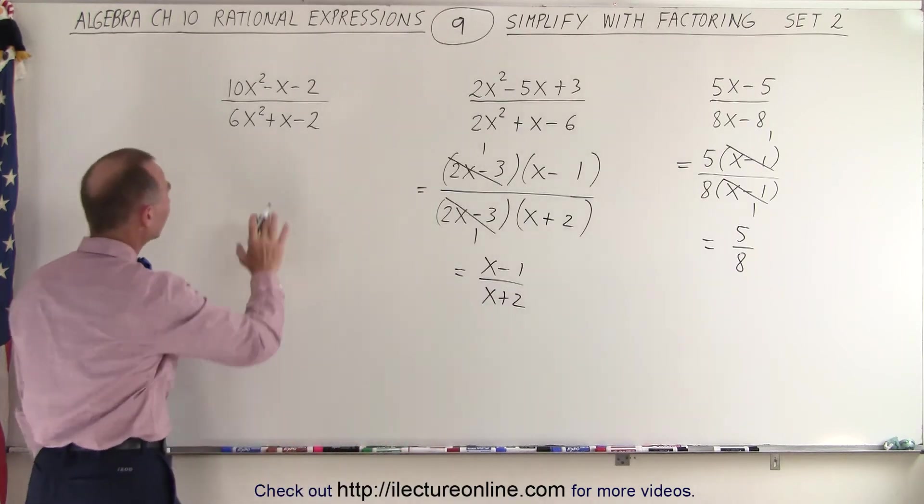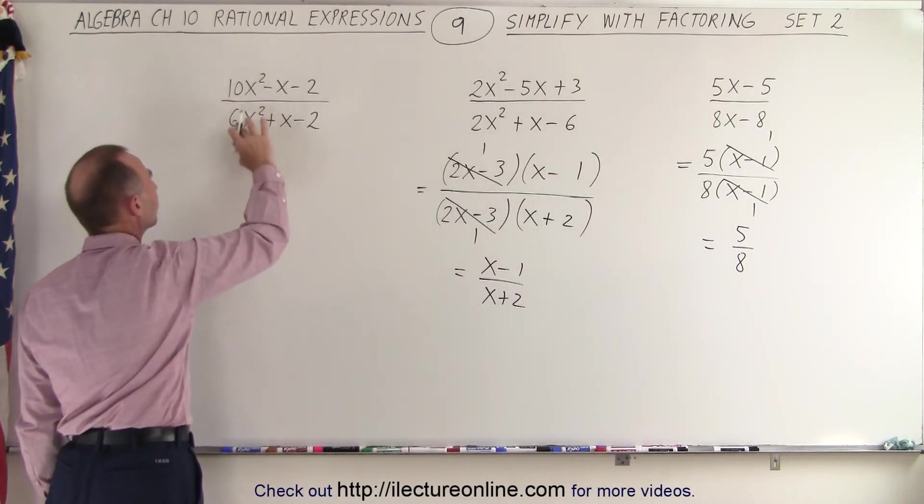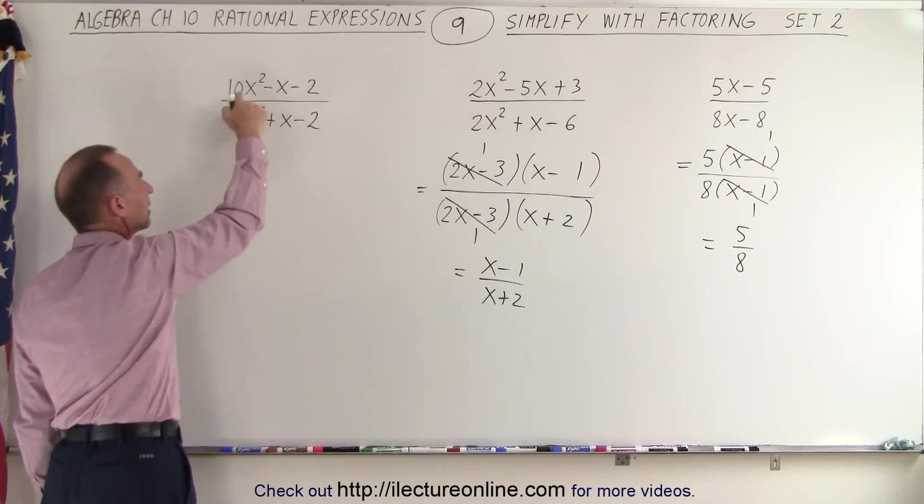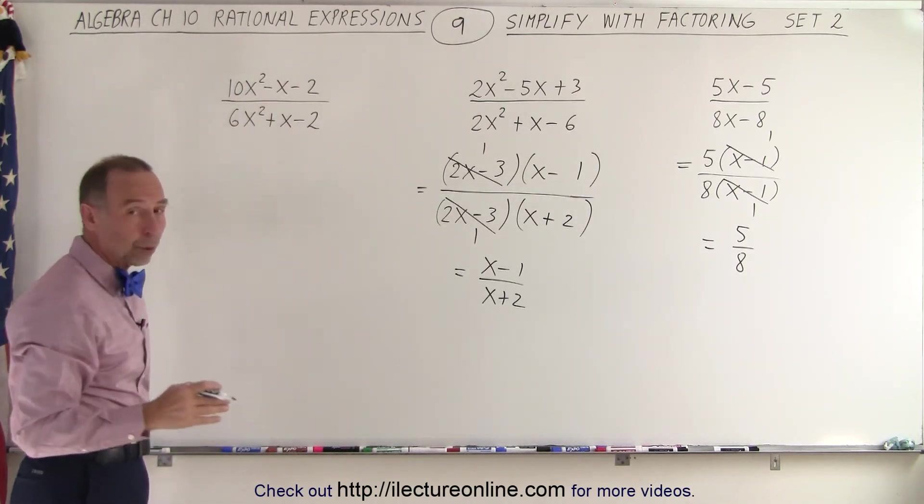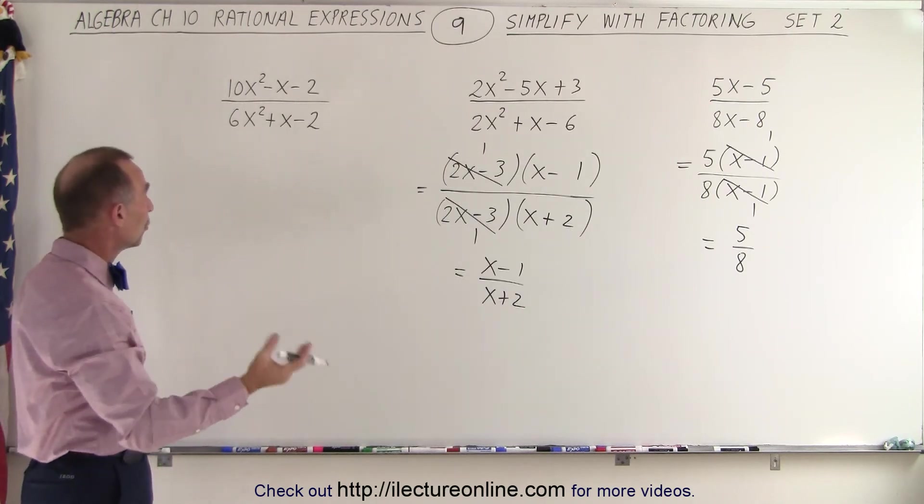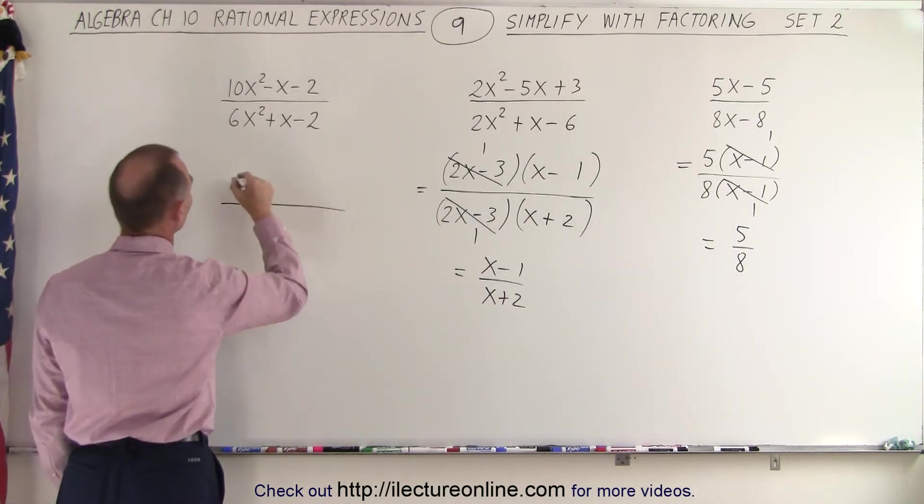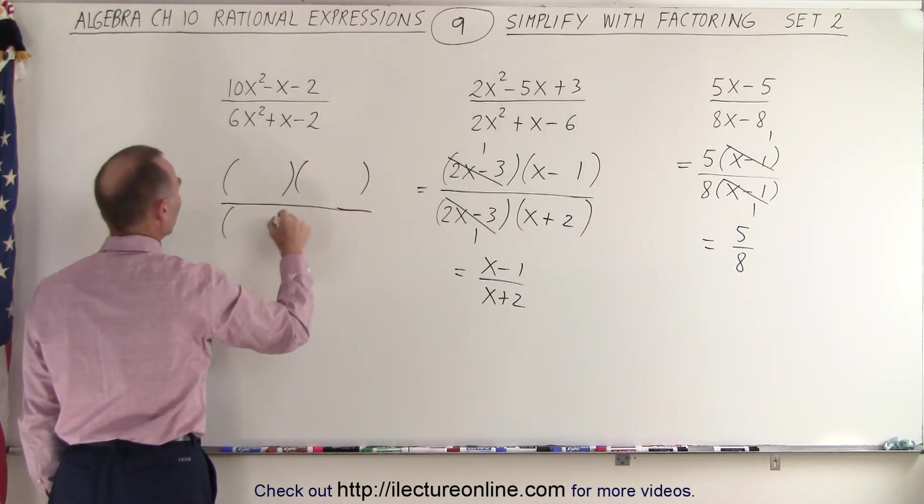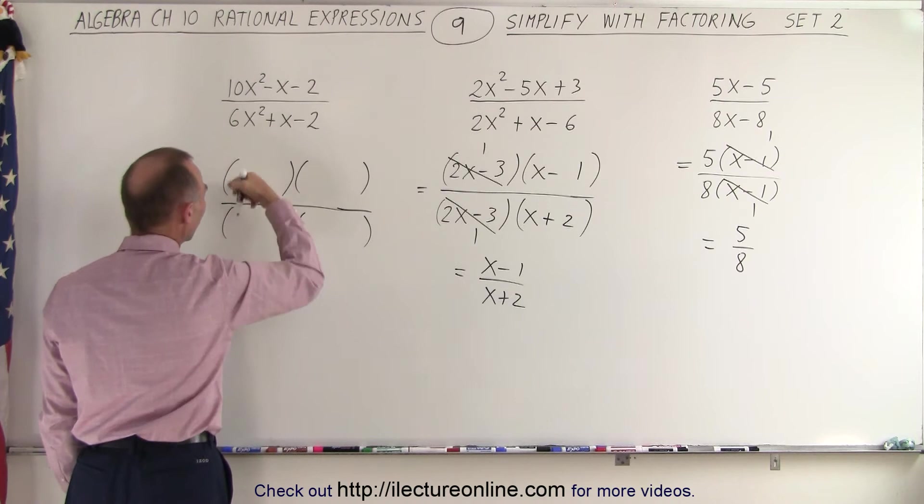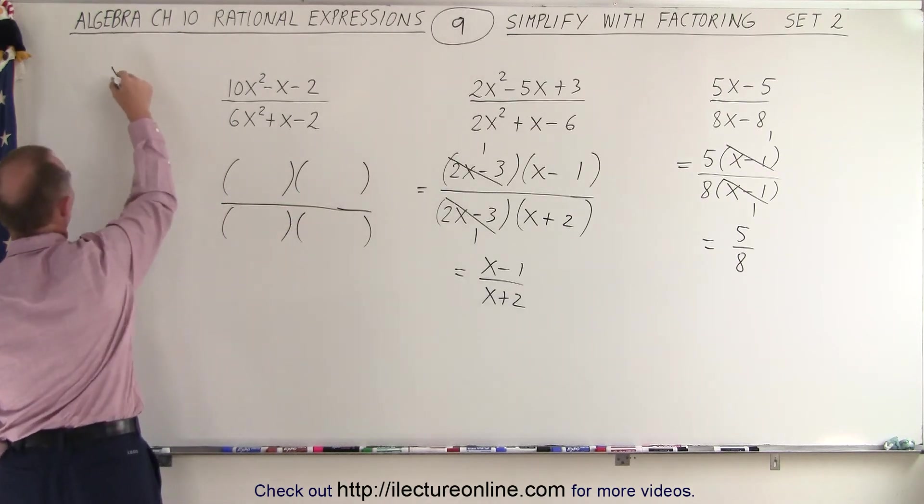In our last example, things get a little bit more complicated because the numerical coefficients in front of the x squared terms are a little bit bigger. And so there we may want to use the FOIL method for both the numerator and the denominator. We know that essentially, the numerator will look like the product of two binomials, and so will the denominator. But what combination? So let's try to use the FOIL method here.